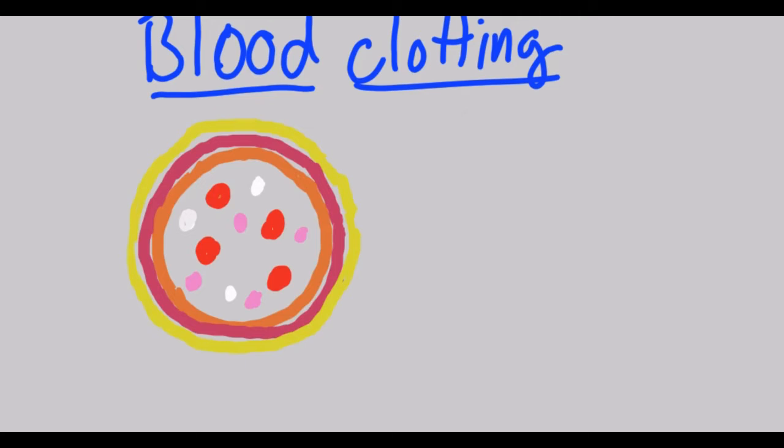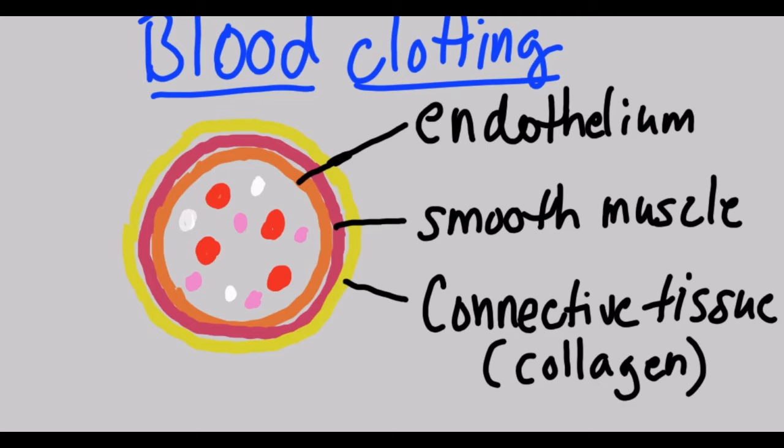To start understanding blood clotting, let's look at a blood vessel. If you were to cut a blood vessel open and look into the end of it, you would see that it has three layers. The inner layer is made of endothelium, or endothelial cells. The next layer is the smooth muscle layer, and the third layer is the connective tissue layer. It's important to know that there's collagen in that connective tissue layer.